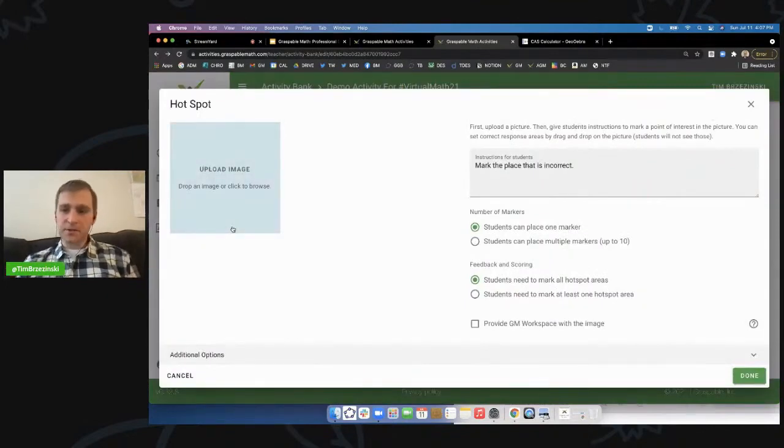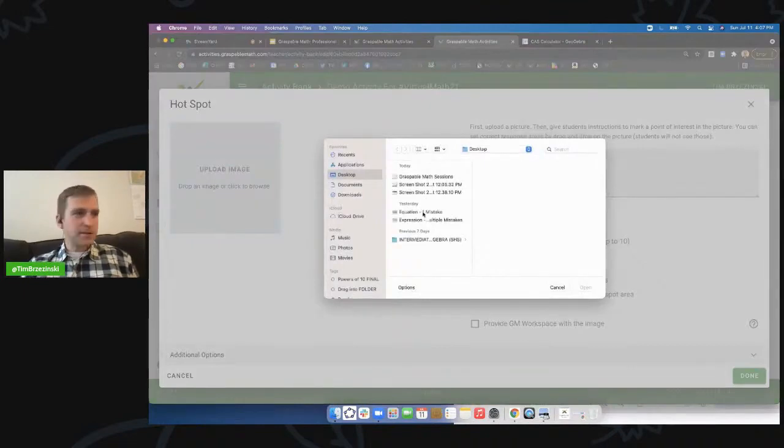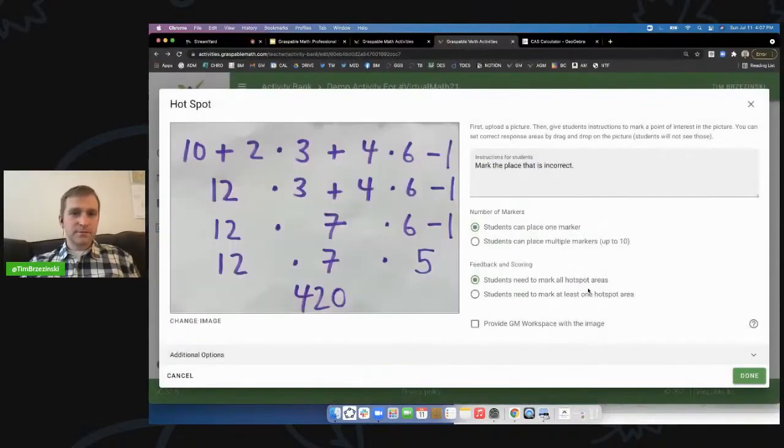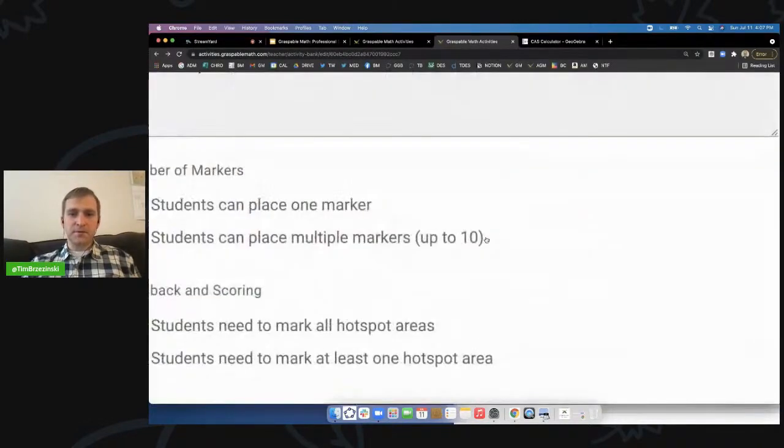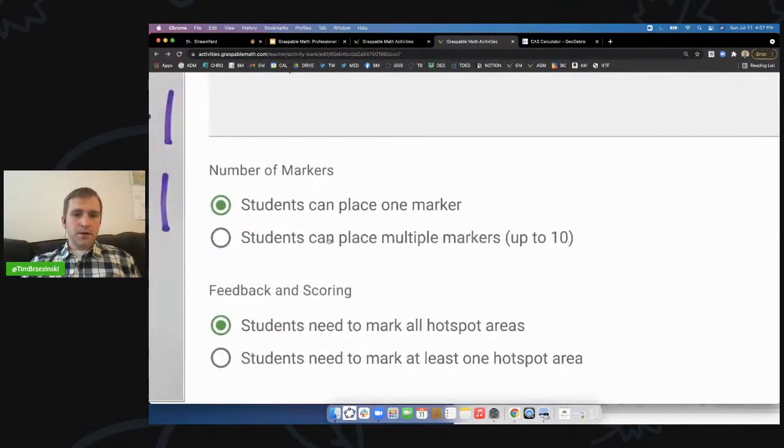So again, as a teacher, I'm building this in my planning period. I click on the image. I do have another screenshot here. I'll have multiple mistakes, big mistakes here. So I'm going to opt for Graspable to have students place more than one marker. See what I mean?